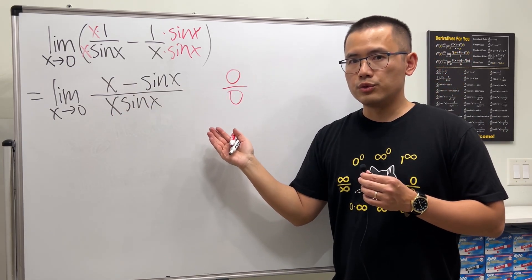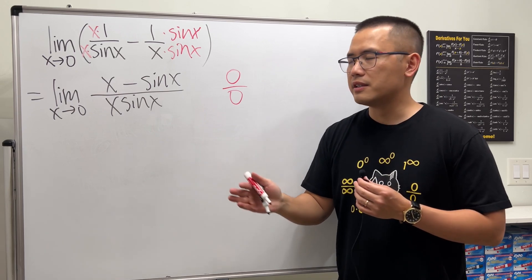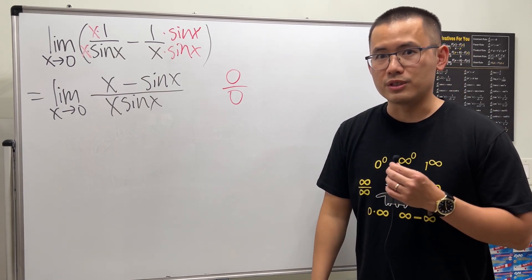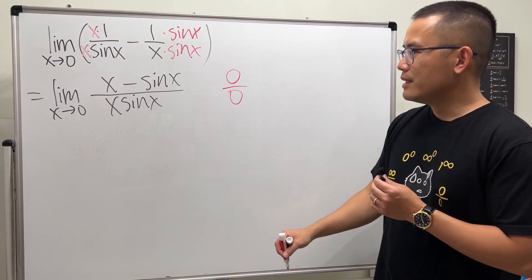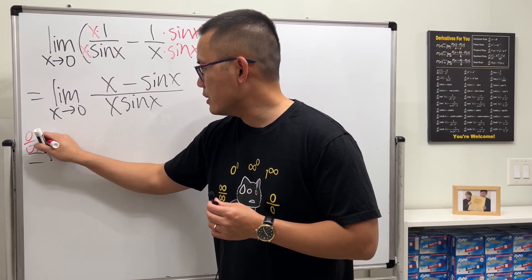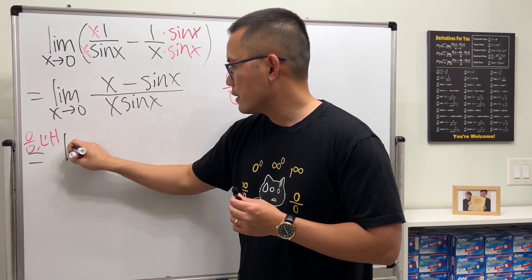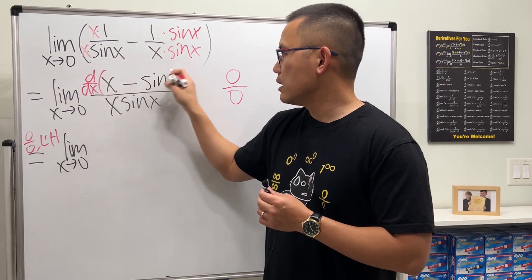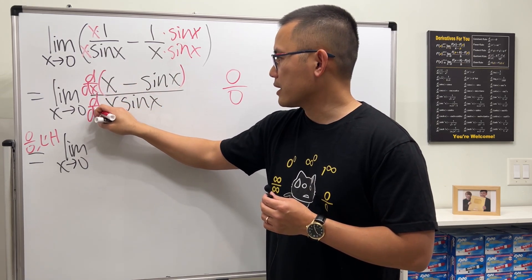We have zero over zero. Well it's bad because we cannot draw any conclusion yet, but it's also good because we can use L'Hôpital's rule. So to use L'Hôpital's rule for the zero over zero situation, just take the derivative of the top and then take the derivative of the bottom.